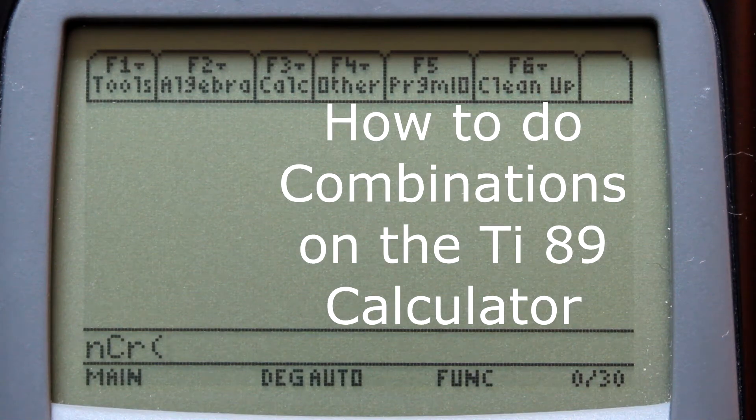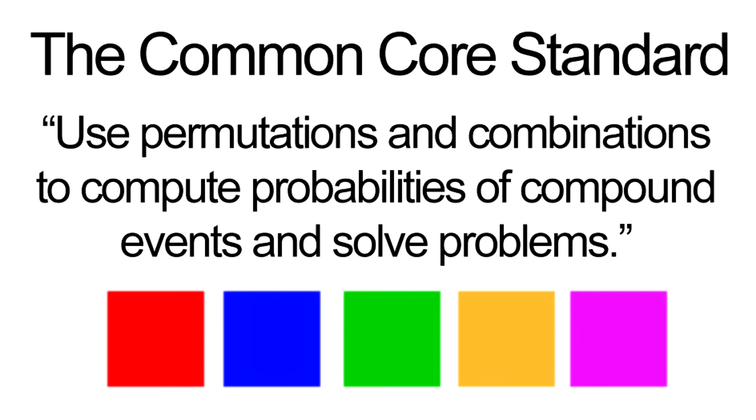How to do combinations on the TI-89 Calculator. The Common Core related standard is: use permutations and combinations to compute probabilities of compound events and solve problems.